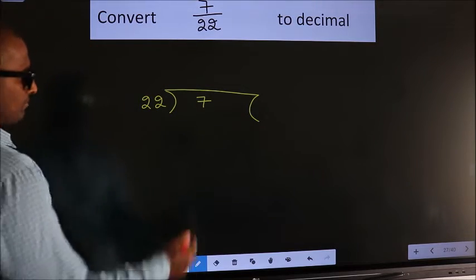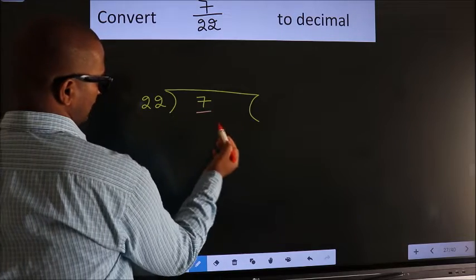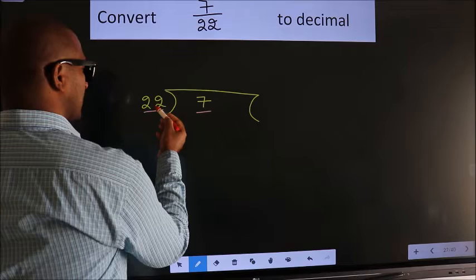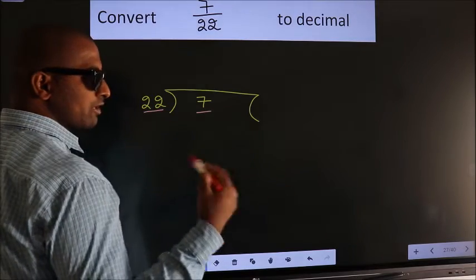Next. Here we have 7. Here 22. 7 is smaller than 22. So what we should do is,